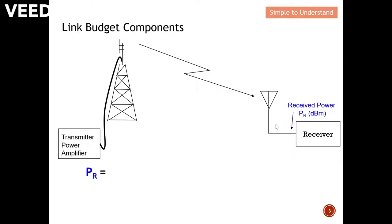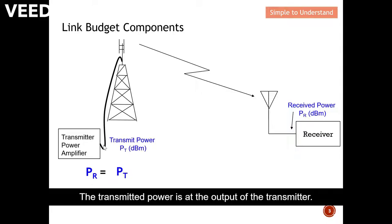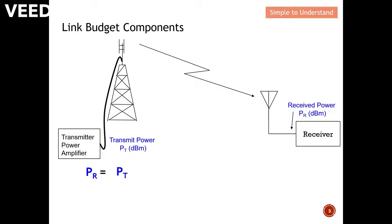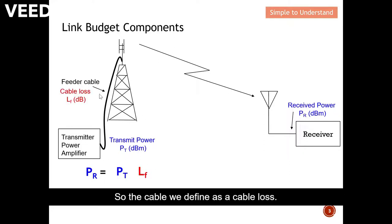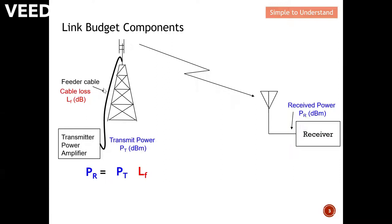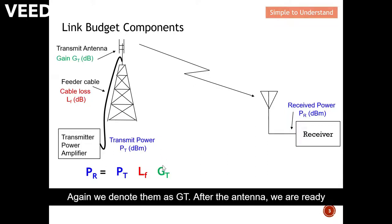Everything starts from the left. On the left we have the transmit power, which is at the output of the transmitter. After the transmit power, normally there will be a cable that links the transmitter to the antenna — we define this as cable loss. After the cable there will be a transmit antenna, which we denote as Gt. After the antenna we are ready to send the signal over the air.